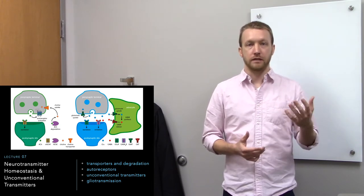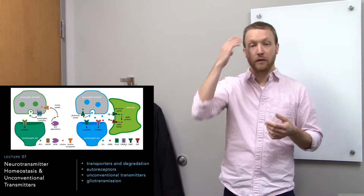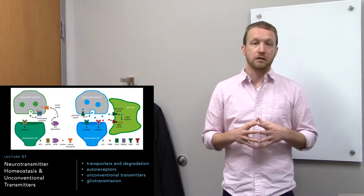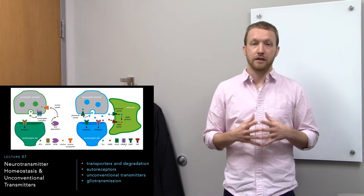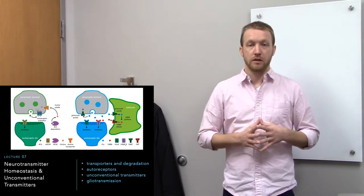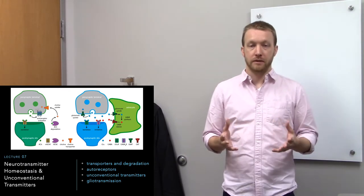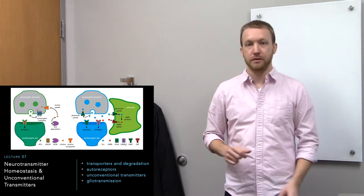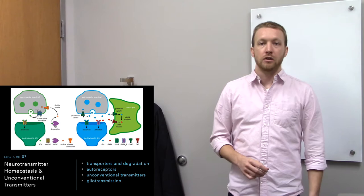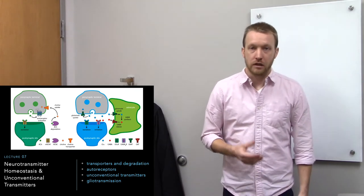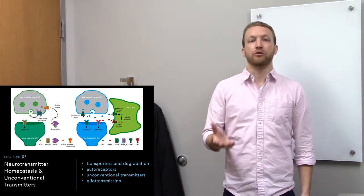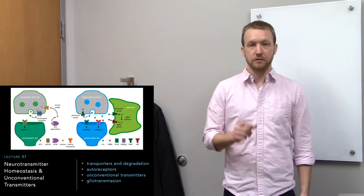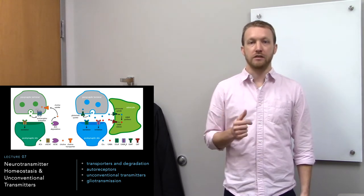Others will have one but not the other. After release, neurotransmitters also help terminate their own signaling through feedback by binding to autoreceptors. The presynaptic site that releases the neurotransmitter will have a way of sensing how much neurotransmitter is out there in the synapse. If neurotransmitter levels are high, that's going to inhibit further release through feedback inhibition. So this is a nice built-in safety mechanism.